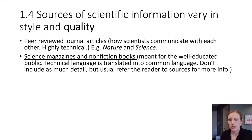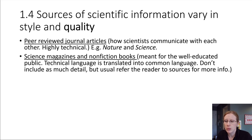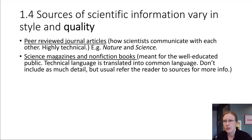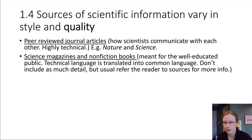Another source of scientific information would be things like science magazines or nonfiction books. They're still pretty high quality, but not necessarily written for scientists — they're written for people who are interested in science but may not work in that field. This is meant for a well-educated public, meaning people who are able to understand scientific things, but some of the technical language is omitted or translated into more common language for ease of understanding. Usually these will point you back to sources, such as citing a journal article, for more detailed information.